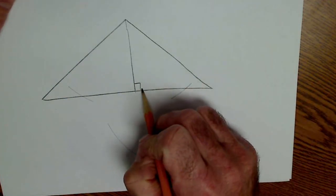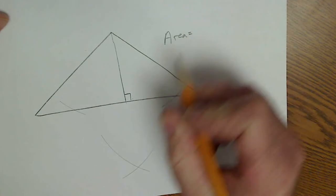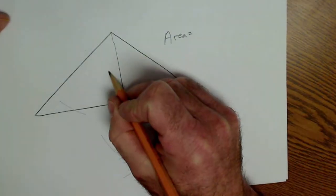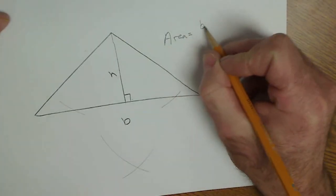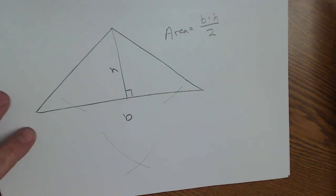Altitude is always perpendicular to the base. The area of any triangle is base times height, which is the altitude, divided by two. That's how you draw altitude of a triangle.